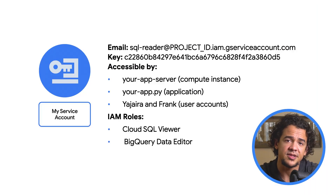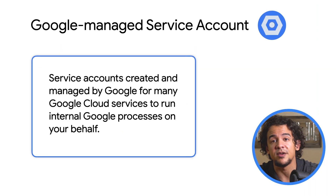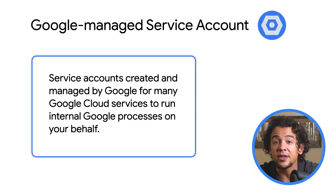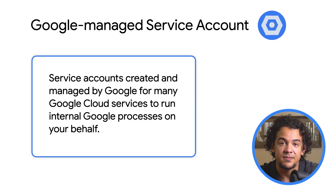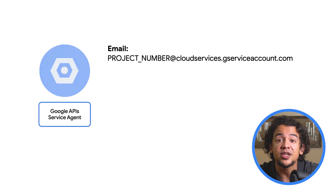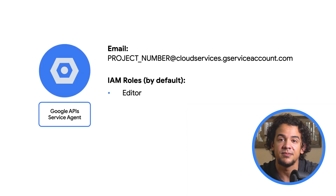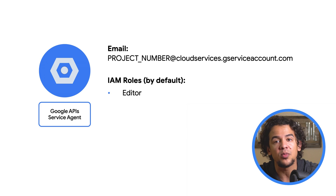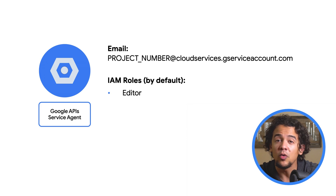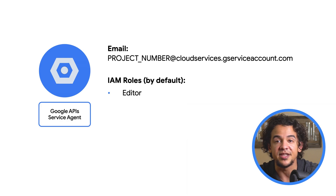So there are two types of service accounts. First, there are Google managed service accounts — you might see these sometimes referred to as service agents. These are service accounts that Google automatically creates and manages for some Google Cloud services. For example, right off the bat, your project is likely to have a Google APIs service agent, which is a service account that runs internal Google processes on your behalf. There could be more Google managed service accounts in your project, but you'll only see them in your IAM policy or audit logs when you enable an API or a service that needs it. With Google managed service accounts, you technically can change and revoke their roles, but that's generally not a great idea because it could cause some services to stop working correctly.